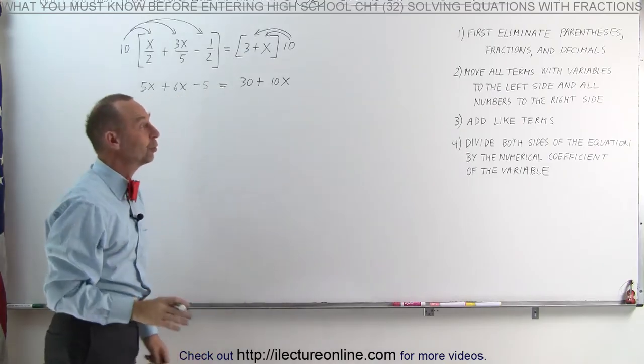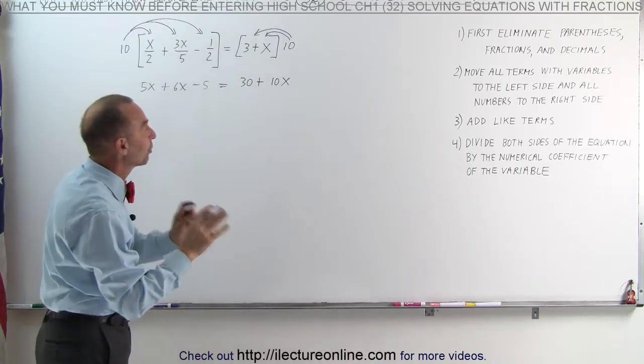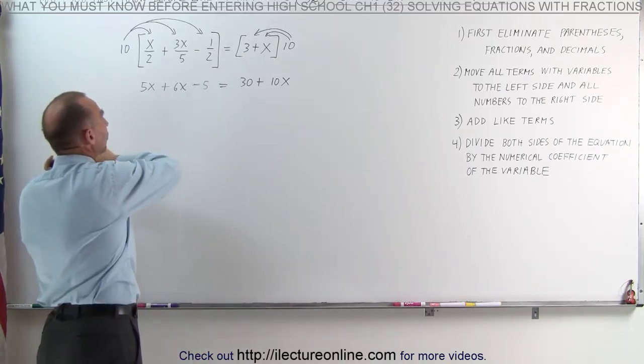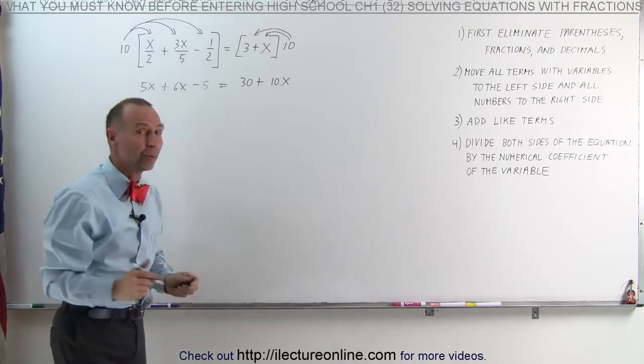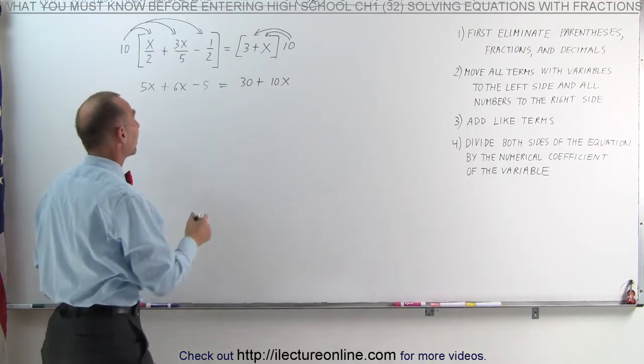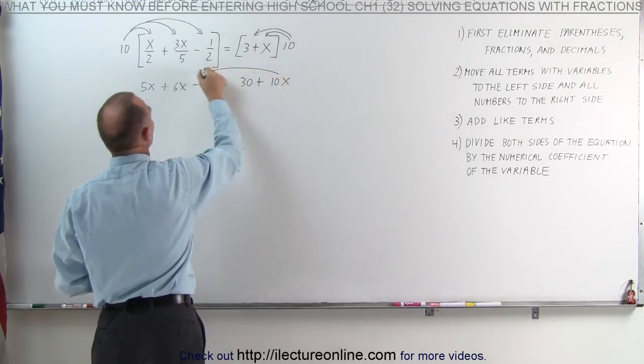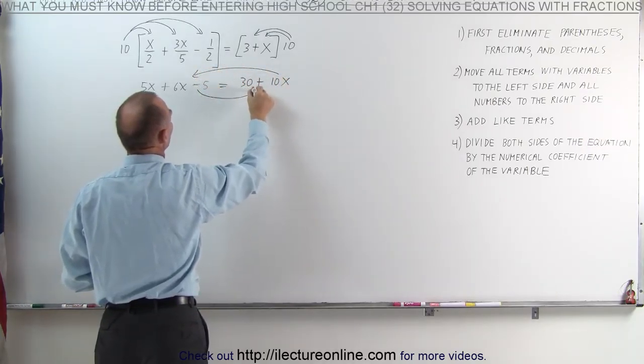Now we're ready to move on to step 2. We want to move all the terms with variables to the left side and all the numbers to the right side. Remember, whenever we cross the equal sign, we must change the sign. The 10x goes to the left and the minus 5 goes to the right.